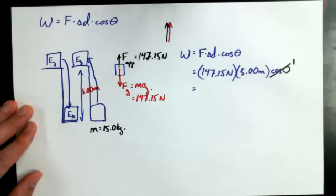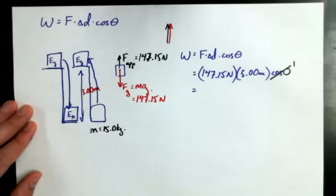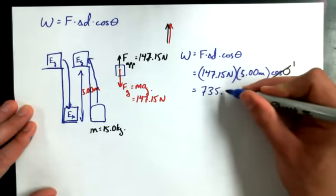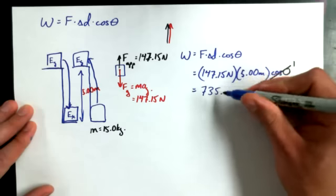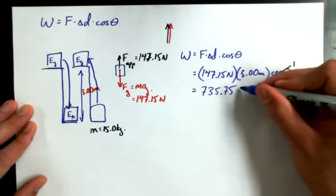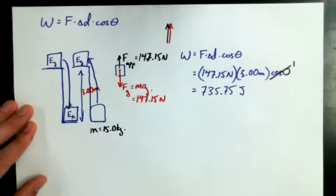147.15 times 5. Is it 735 point something? What do you get? Yep? 735.75. 7.5 newton meters. A newton meter is equivalent to a joule. So that's how much work is going to be done to lift this thing.